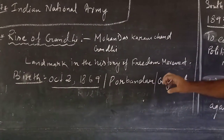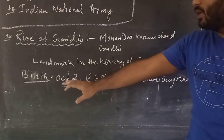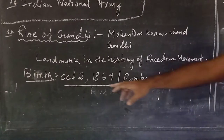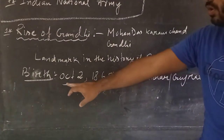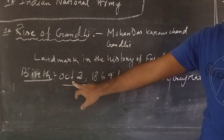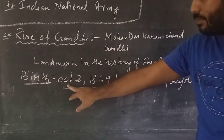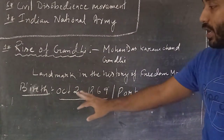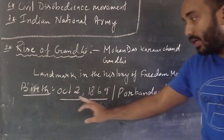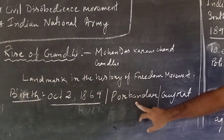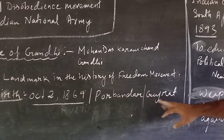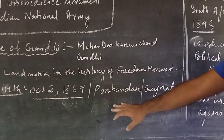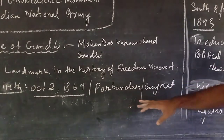Next, let us look at his birth date and place. Mahatma Gandhi was born on October 2, 1869. We celebrate Gandhi Jayanti on that day. He was born in a place called Porbandar in Gujarat.